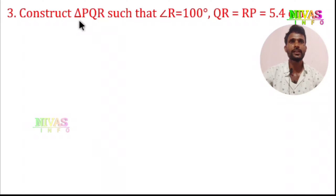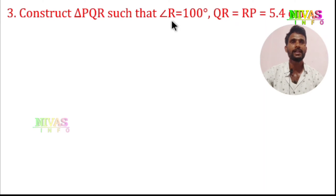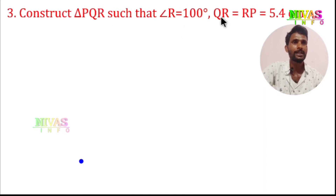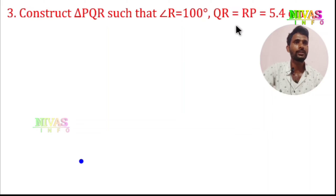Question number 3. Construct triangle PQR such that angle R is equal to 100 degrees and QR is equal to RP. RP is equal to 5.4 cm. So two sides are equal, meaning it is an isosceles triangle. Angle R is equal to 100 degrees.